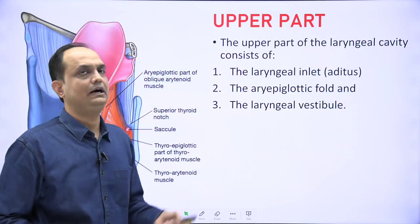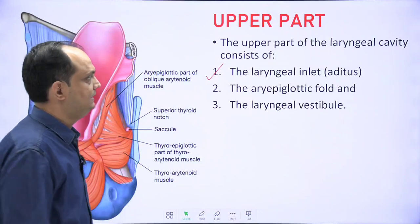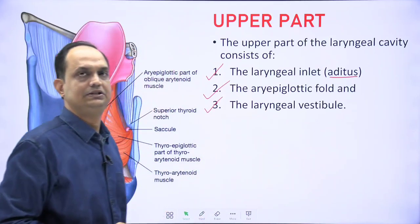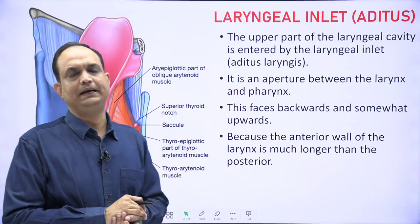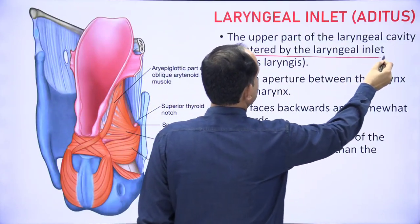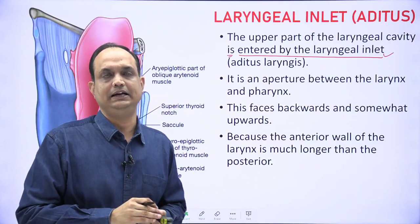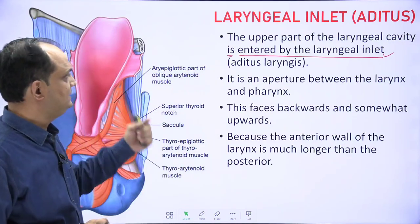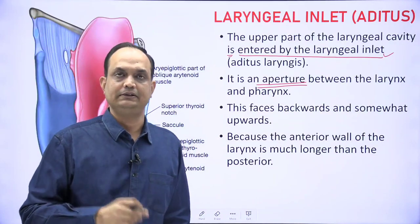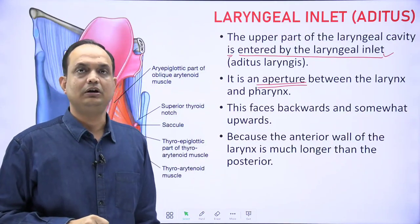What structures are present in the upper part of the laryngeal cavity? The upper part has three structures: the laryngeal inlet — also known as the aditus — the aryepiglottic fold, and the laryngeal vestibule. The laryngeal inlet or aditus is the entrance into the laryngeal cavity. It is the aperture between the larynx and the pharynx. The larynx opens into the laryngopharynx, and that uppermost opening is known as the laryngeal inlet.